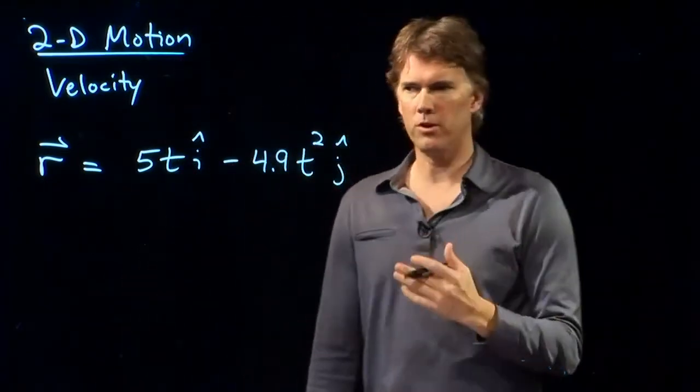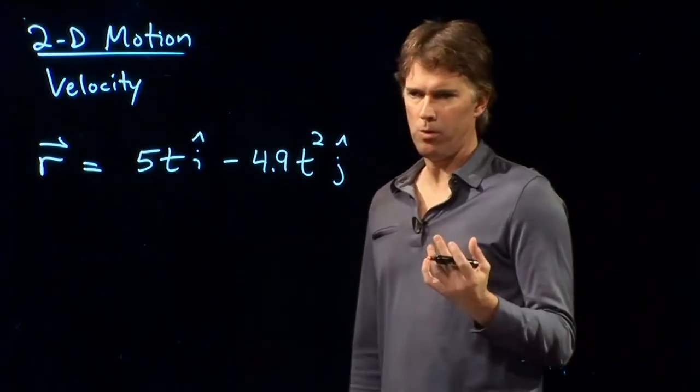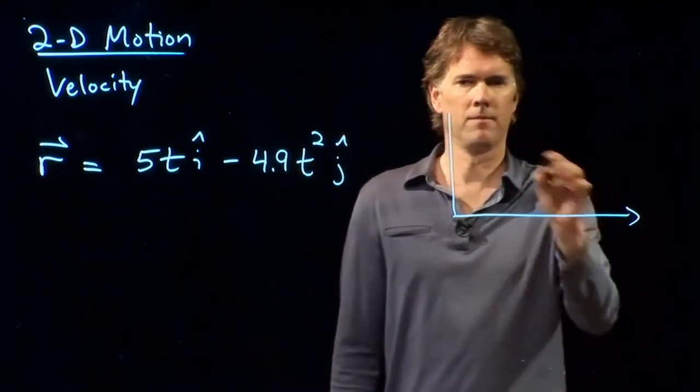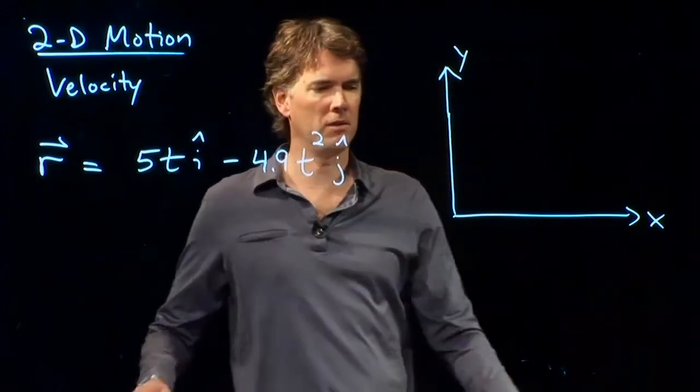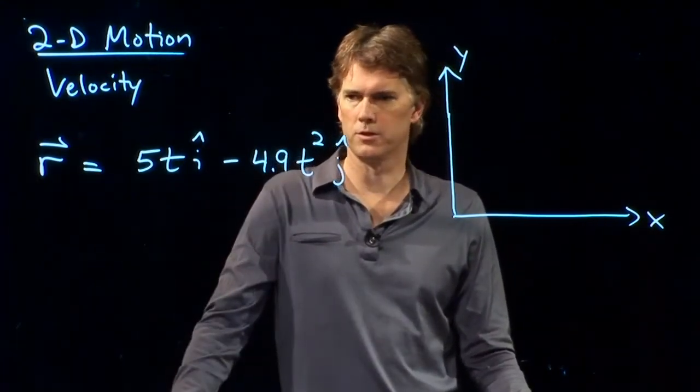And this is a position vector as a function of time. And we could, of course, map this out if we'd like. Here's an x, y coordinate space. Let's see if we can map out what r looks like as a function of time.